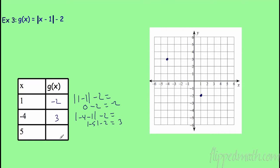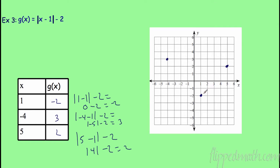Last, plug in x = 5: |5 - 1| - 2 = |4| - 2 = 4 - 2 = 2, giving the point (5, 2). Absolute value graphs are V-shaped. This reinforces that function notation is nothing new — we could have written y = |x - 1| - 2 and gotten the points the same way. It's just new notation that takes a little time to get used to.